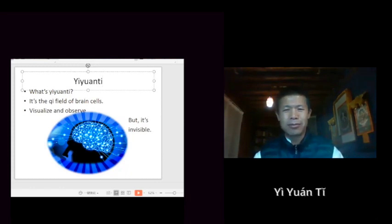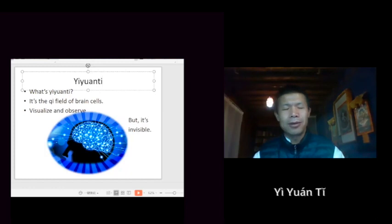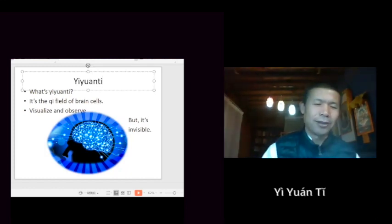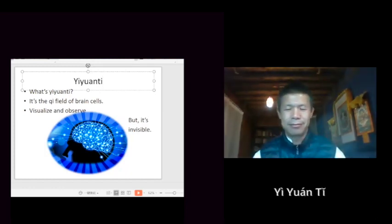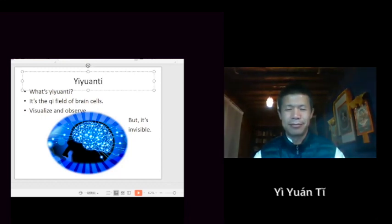Uno es el físico, la materia física, el segundo nivel es la energía y el tercer nivel es la información. Esos tres niveles se están mezclando continuamente como una completud.